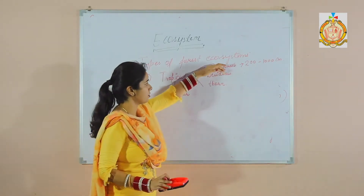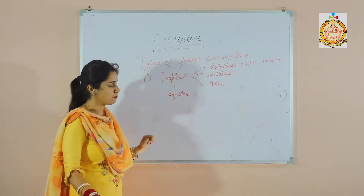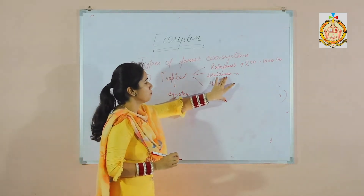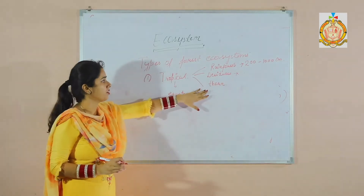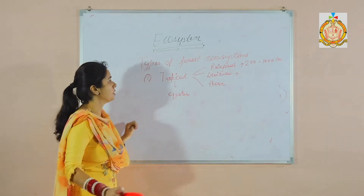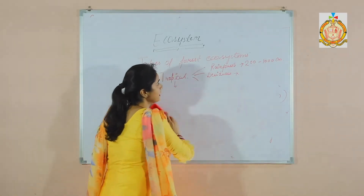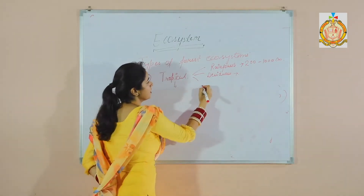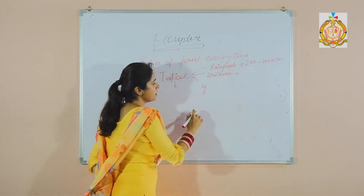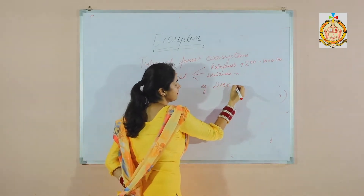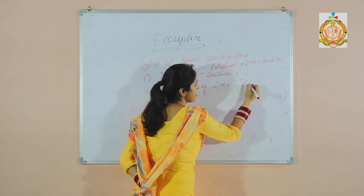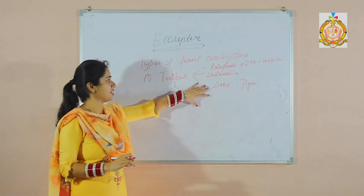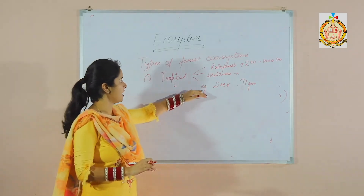The second type is the tropical deciduous forest. Deciduous forests most of the time remain dry because there is not much rain in this forest ecosystem. Different types of organisms are present, such as deer and tiger. Vegetation that is present includes euphorbia, acacia, etc.